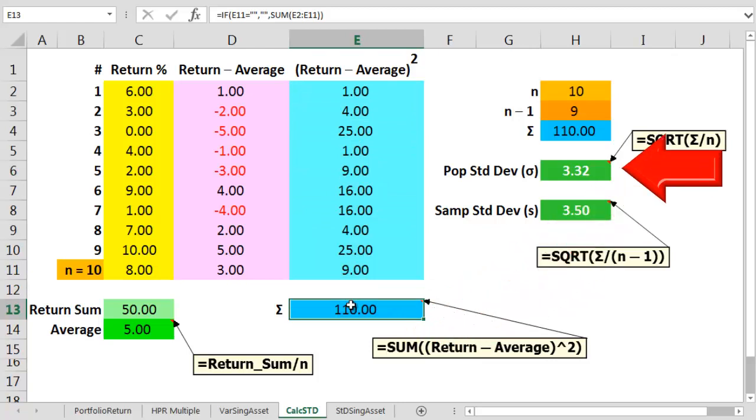We can then generate a population standard deviation, or sigma, by dividing this sum by 10, or n, and then by square rooting this number. If the 10 returns are just a sample,